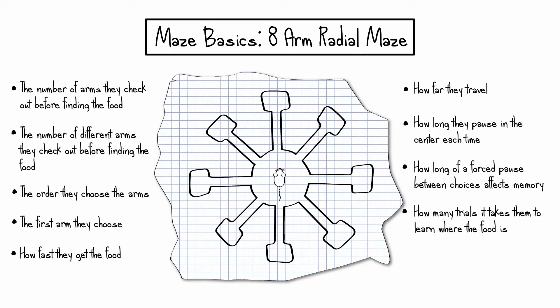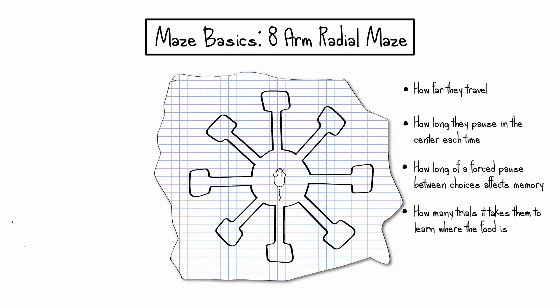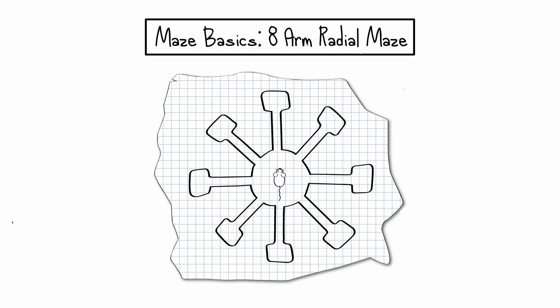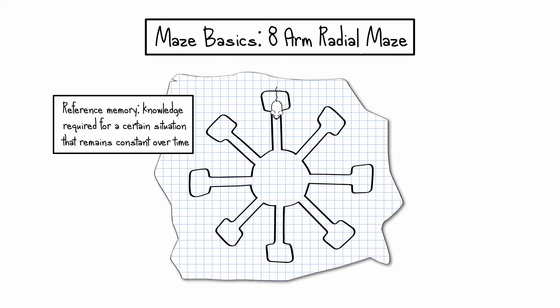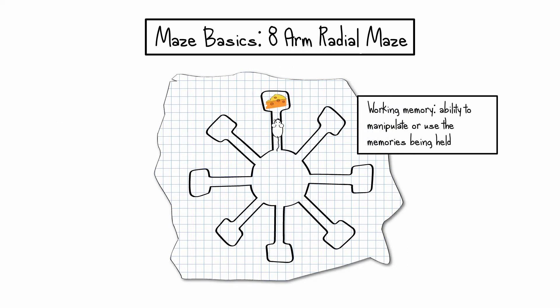Each parameter can tell us about different processes that contribute to the overall ability of mice to navigate the maze. A common area of study with the 8-Arm Radial Maze is reference memory and working memory. Reference memory refers to the knowledge for a certain situation that remains constant over time. Working memory is the ability to manipulate or use the memories being held.